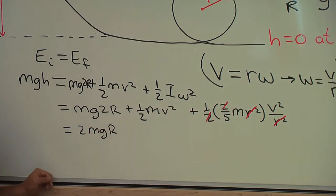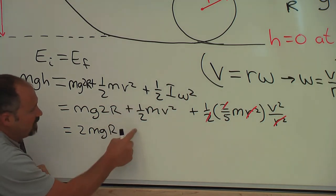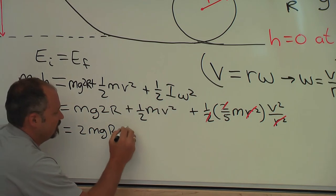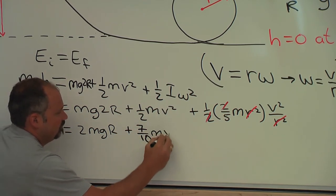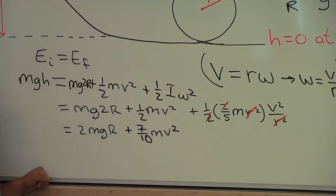And I have ½ plus ⅕. You can do the math at home, but ½ plus ⅕, well, it's 5/10 and 2/10, so that's 7/10. 7/10 mv² and mgh on this side.